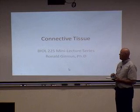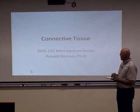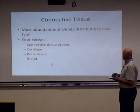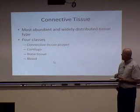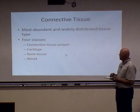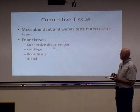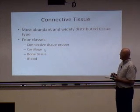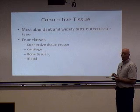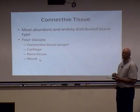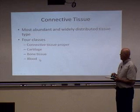Hello, students. This lecture is on connective tissue, and we're still in Chapter 4 of the book. Connective tissue is very abundant in the body, and there are four classes of connective tissue: connective tissue proper, cartilage, bone tissue, and blood. Bone is a connective tissue, and blood is a connective tissue as well.